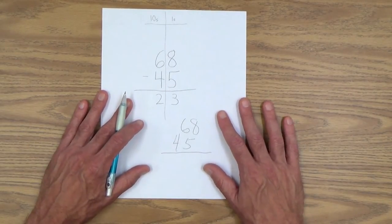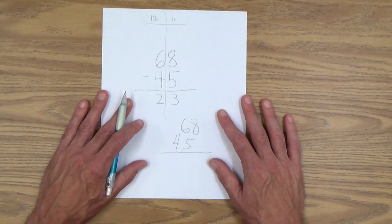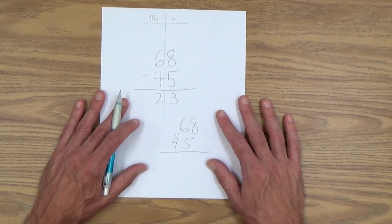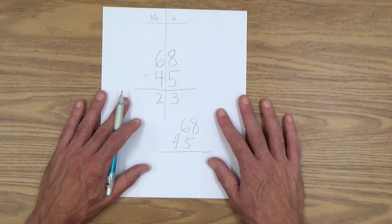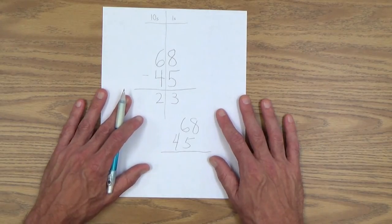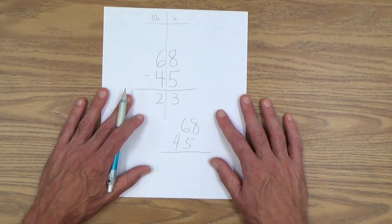And of course, as I say so often, give her as much or as little support as she needs on those. And that's lesson 36, subtraction with two digit numbers.